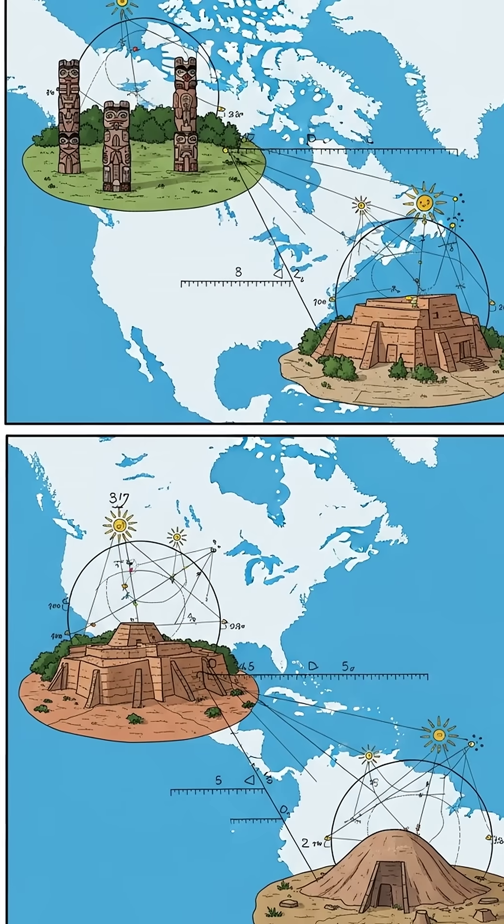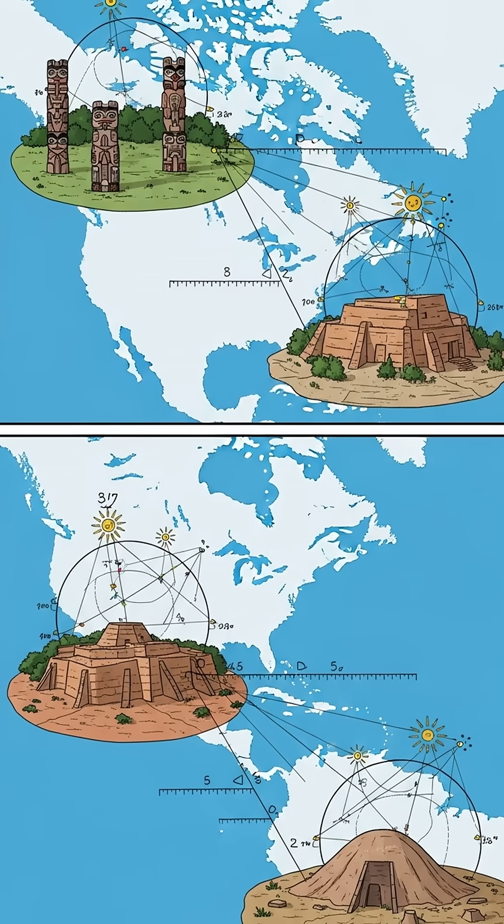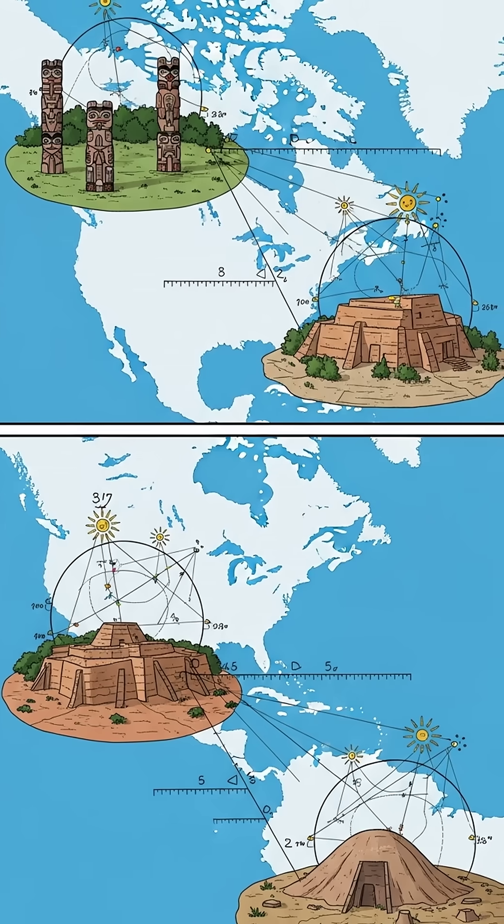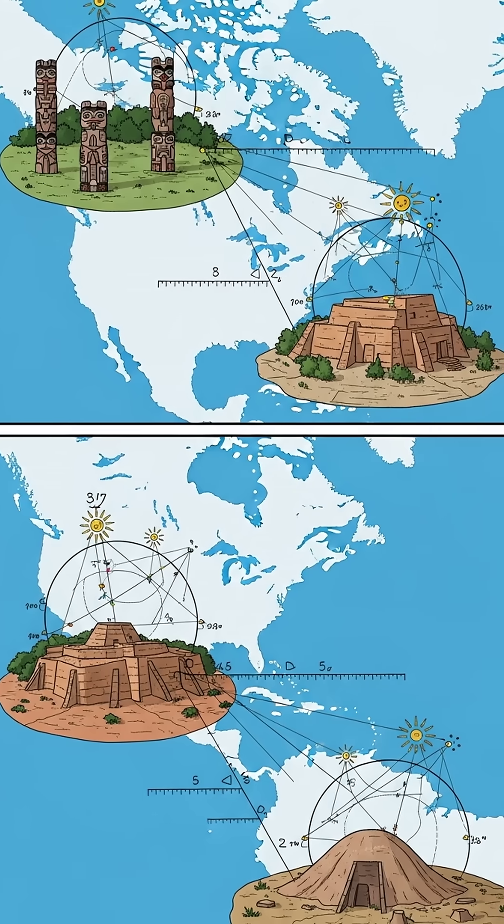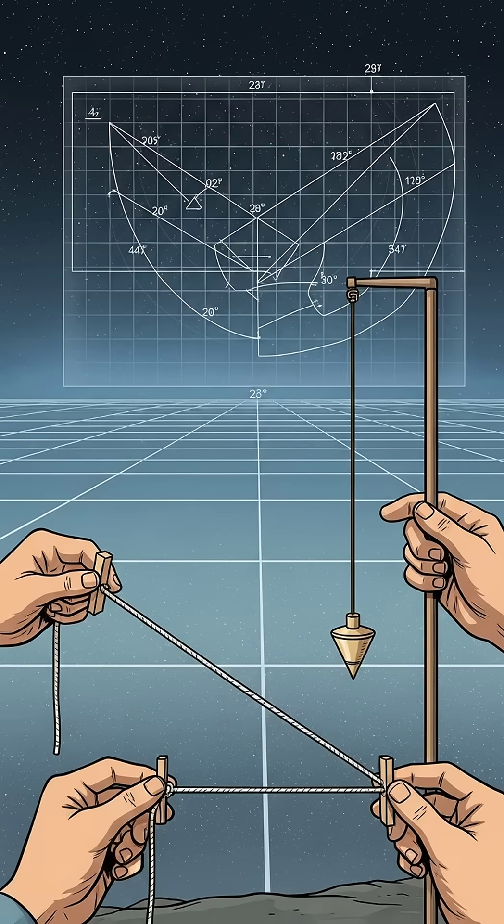These sites are separated by distance, culture, and time. But they solve the same problem the same way. Large-scale construction tied to celestial cycles, with error margins that leave little room for guesswork.